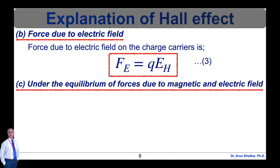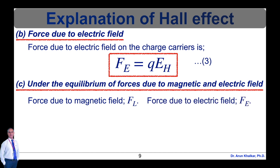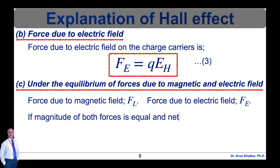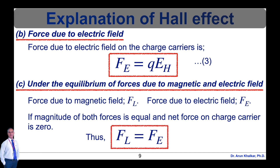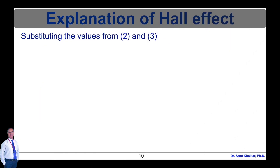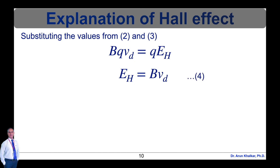Under equilibrium of the forces due to the magnetic and electric fields, charge carriers are under the influence of two forces: F_L due to the magnetic field and F_E due to the electric field. Both forces act in opposite directions. Under equilibrium, if the magnitudes of both forces are equal, the net force on the charge carrier is zero. Thus we write F_L = F_E. Substituting from equations 2 and 3: B·q·v_d = q·E_H, which simplifies to E_H = B·v_d — equation number 4.